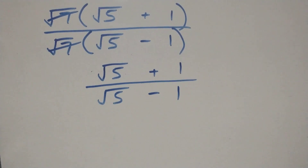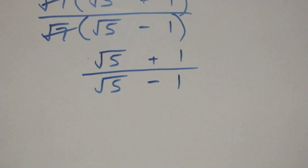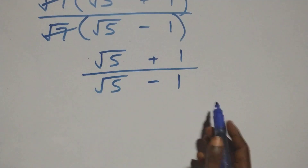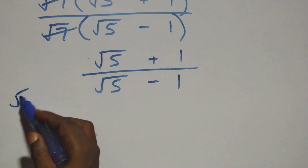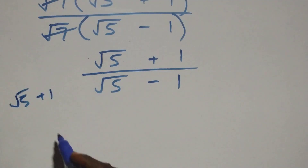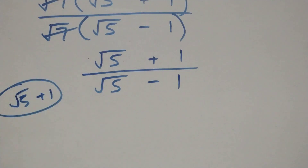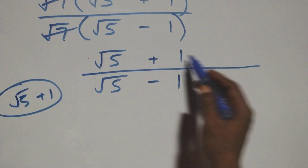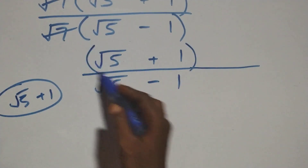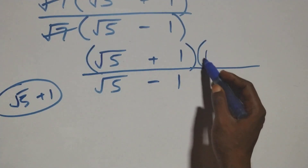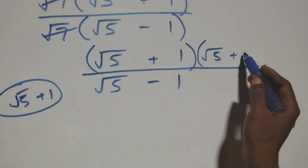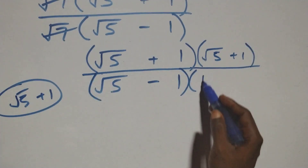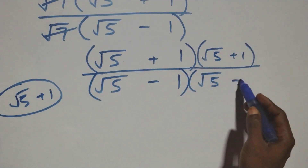The next step is to rationalize this expression. We multiply the numerator and denominator by the conjugate of the denominator, which is root 5 plus 1. We use this to multiply both the numerator and denominator, so we multiply by (root 5 plus 1) on both top and bottom.